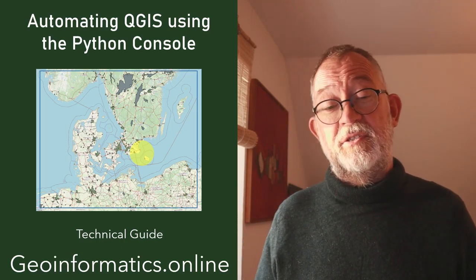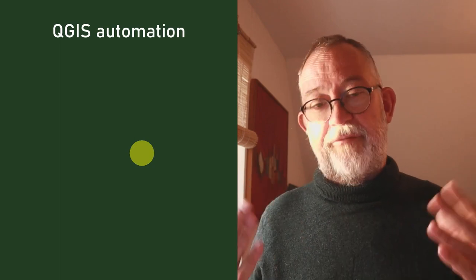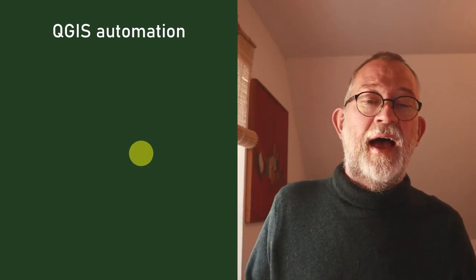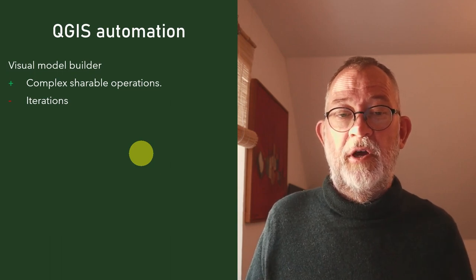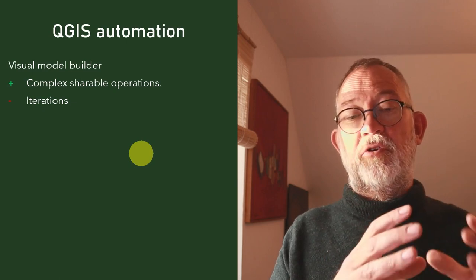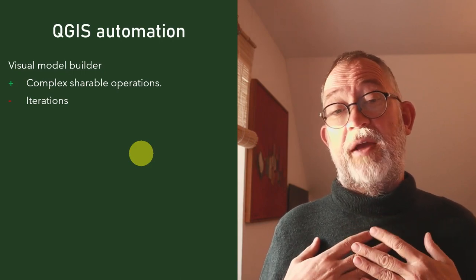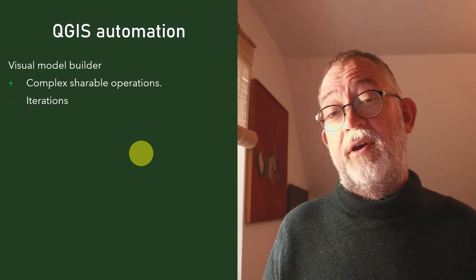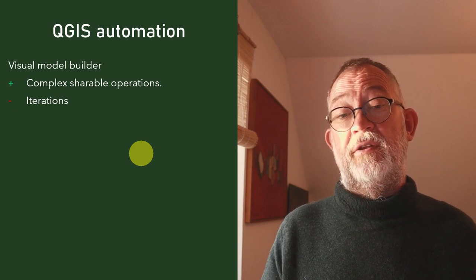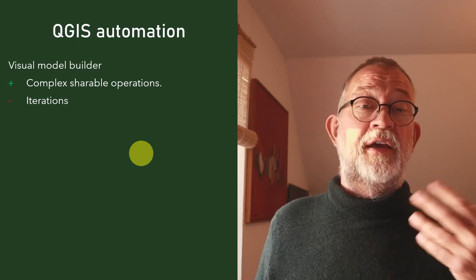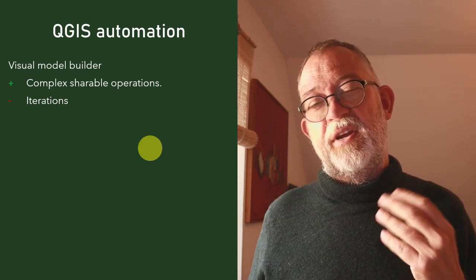There are really three or four ways of doing automation in QGIS. One is to use the visual model builder, where you can visually connect processing tools together to do something complex. That's really useful when you have other people on a project who don't have full insight into geodata processing — you can make a tool and give it to them to run when needed. It's a good tool for sharing complex analysis, but not great for iterations.